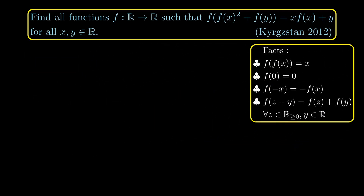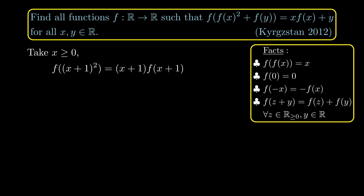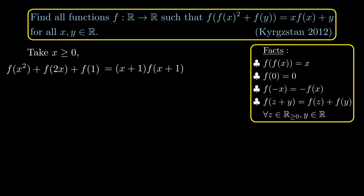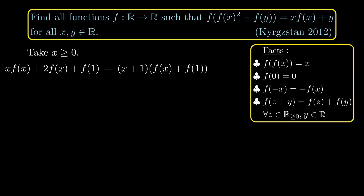Next, take x ≥ 0 and note that f((x+1)²) = (x+1)·f(x+1). Expanding the left-hand side and splitting using the additive property we just derived, we get x·f(x) + 2·f(x) + f(1). The right-hand side expands to (x+1)·(f(x) + f(1)), giving x·f(x) + x·f(1) + f(x) + f(1). This is the expression we compare.